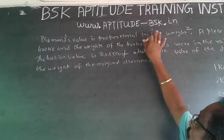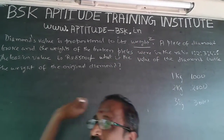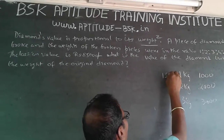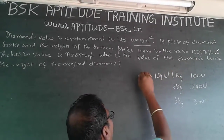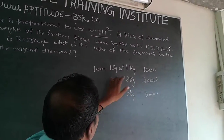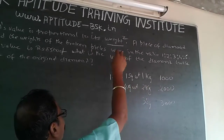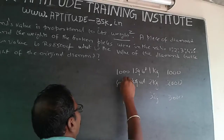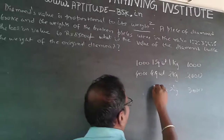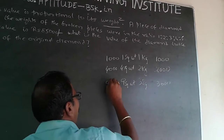But the question states the value is proportional to weight squared. So I convert to square weight: 1 kg squared is 1 square unit, value stays 1000. 2 kg squared is 4 square units, so it becomes 4000 — that is 4 into 1000. 3 kg squared is 9 square units, so the value becomes 9000.